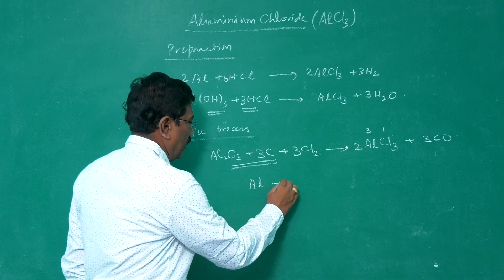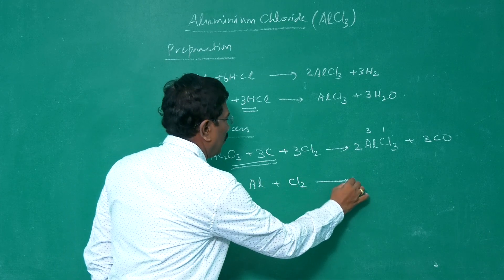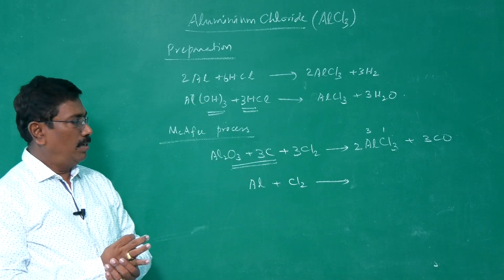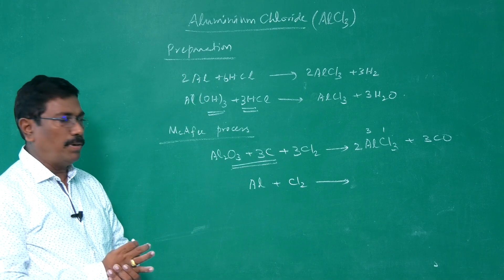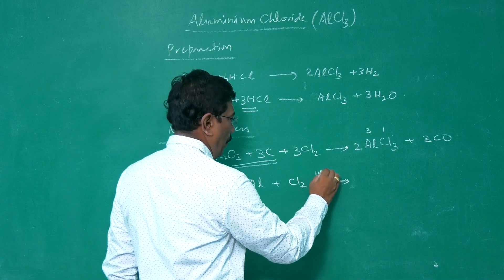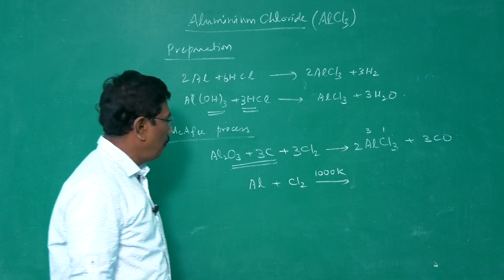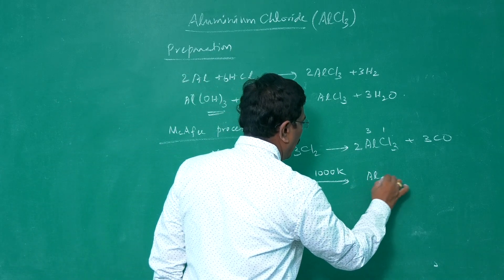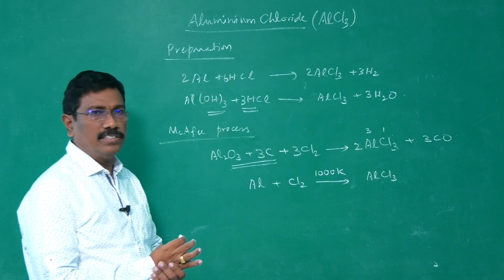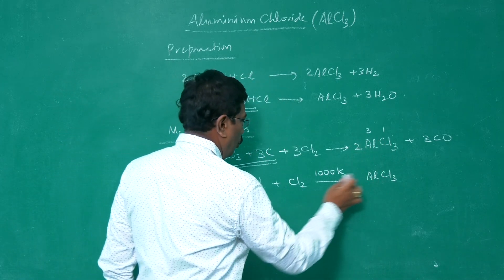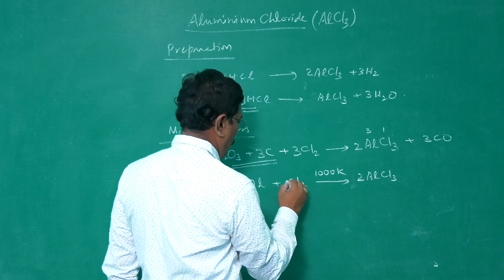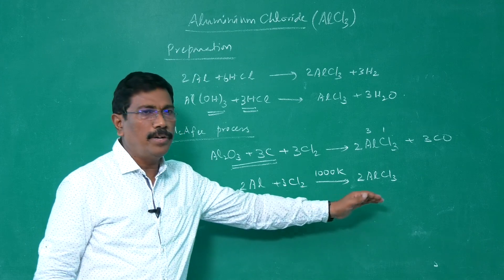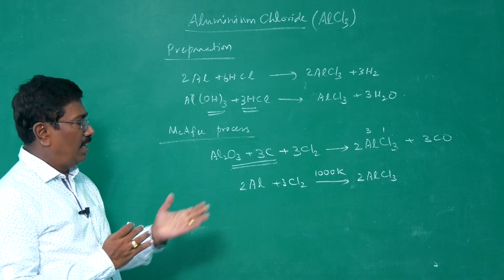It can also be prepared by passing chlorine over aluminium. Aluminium is allowed to react with chlorine at high temperature, around 1000 K. At this temperature, aluminium reacts with chlorine to become aluminium trichloride: 2Al + 3Cl₂ → 2AlCl₃.